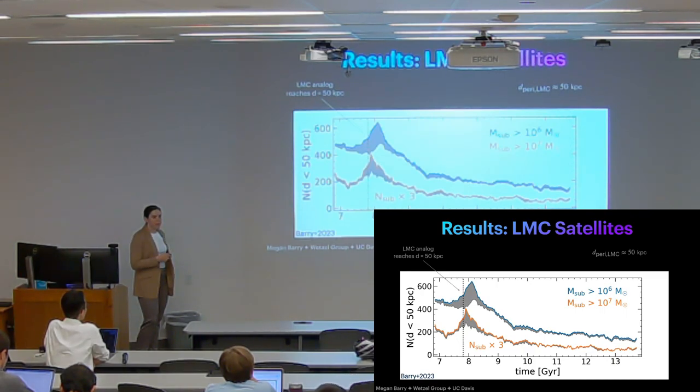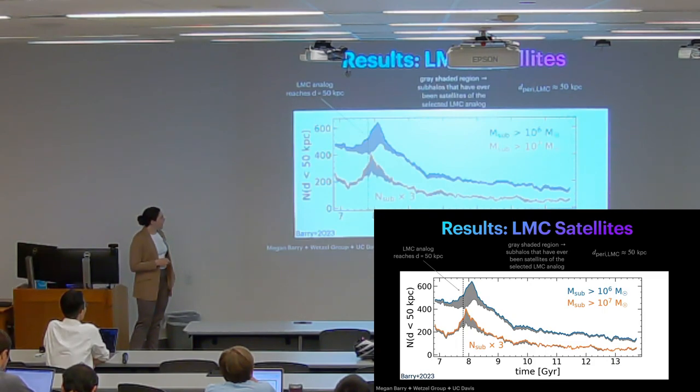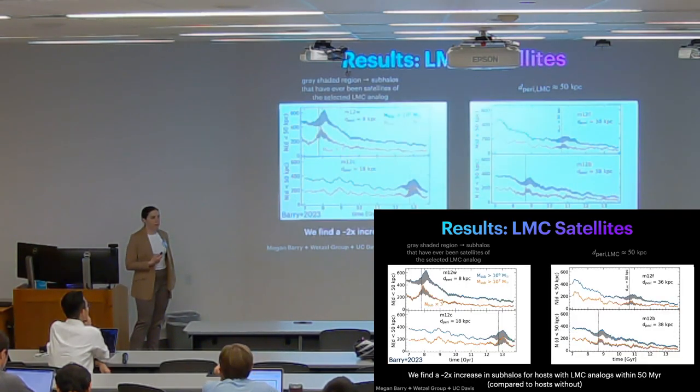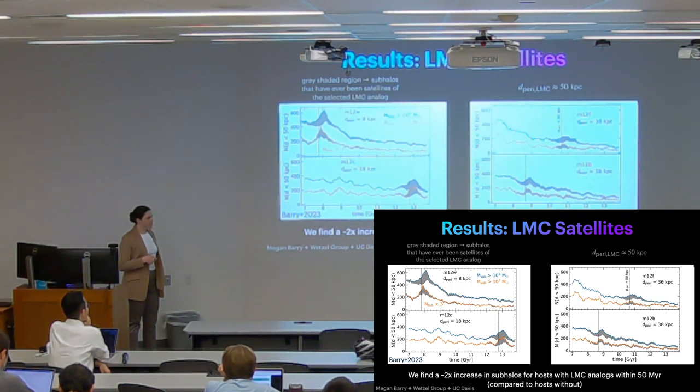And this gray shaded region is subhalos that we identified as being satellites of the LMC. So these LMC associates do seem to be enriching the inner galaxy with extra subhalos. And these are all four of our LMC analog hosts, and you can see in each case that there is a bump, a noticeable bump in subhalo numbers after each pericentric passage.